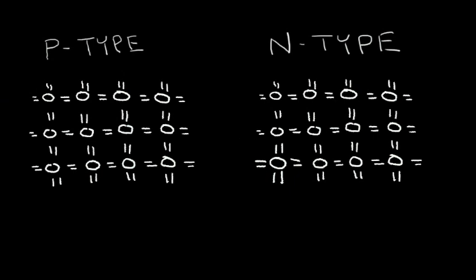In this P-side, I want to replace this silicon atom here with a boron atom. Recall that a boron atom, instead of having four electrons in the outer shell, it only has three, so I'm going to remove one of the electrons here. I'm going to replace that with an X. This X means that I have a hole, or an absence of electrons. When I have this situation, this silicon lattice is no longer stable — the charge can move around. For example, this electron can move over to this slot.